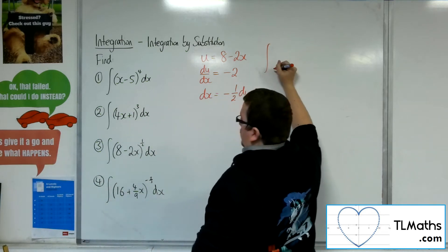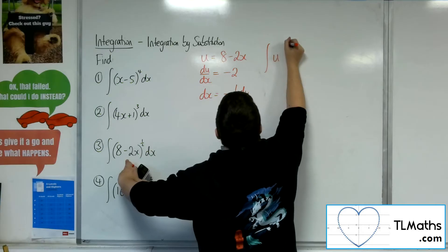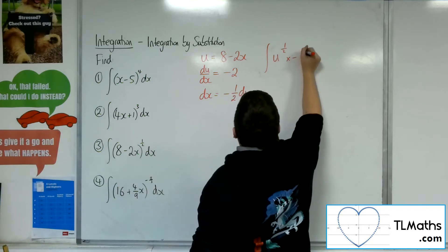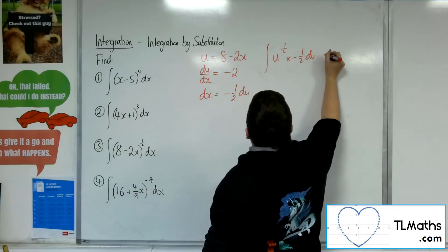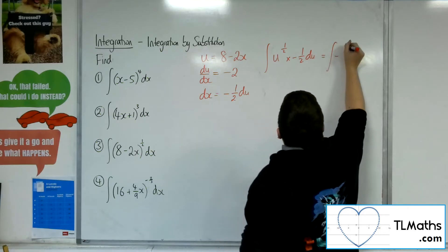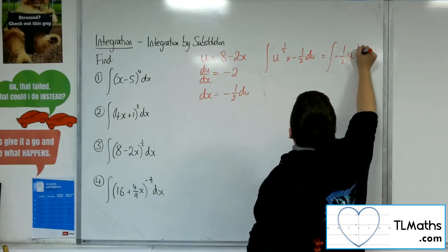So we have the integral of u to the half, times minus 1 half du. So this is the integral of minus 1 half u to the half du.